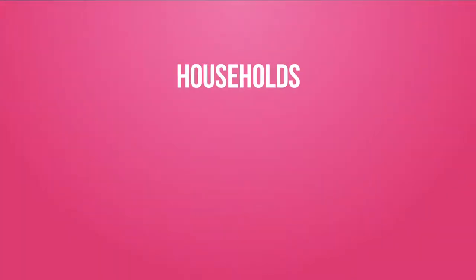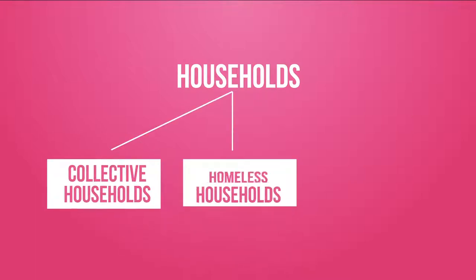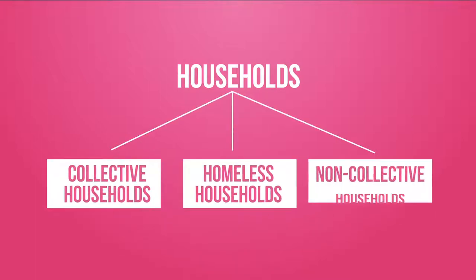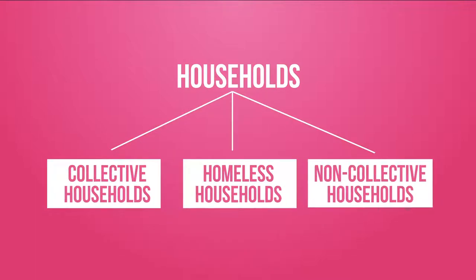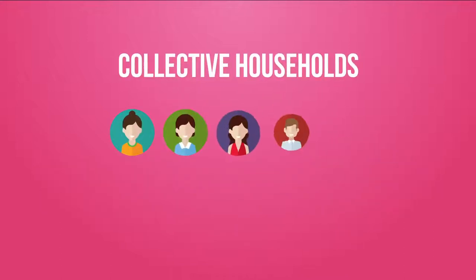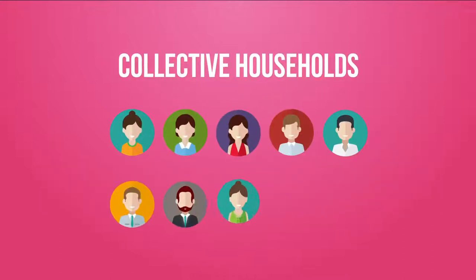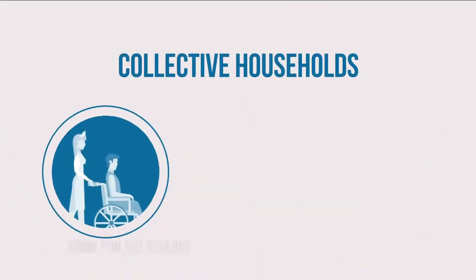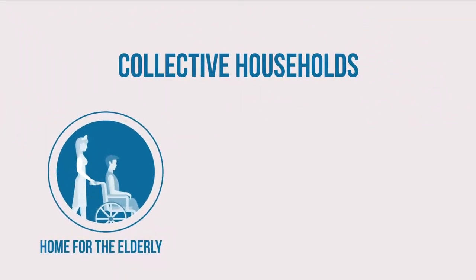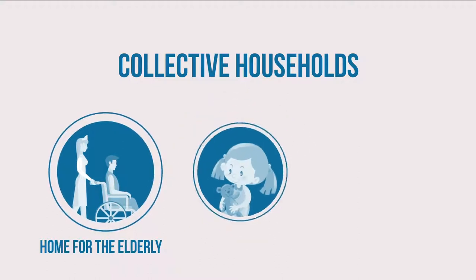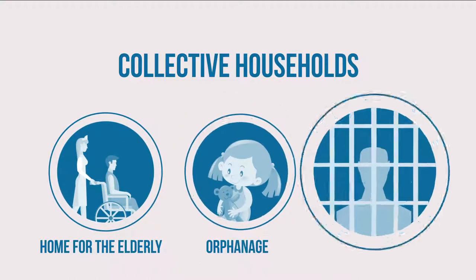Households can be divided into collective households, homeless households, and non-collective households. Collective households consist of more than 10 persons who have no family relation to each other. Examples are persons living in homes for the elderly, orphanages, and prisons.